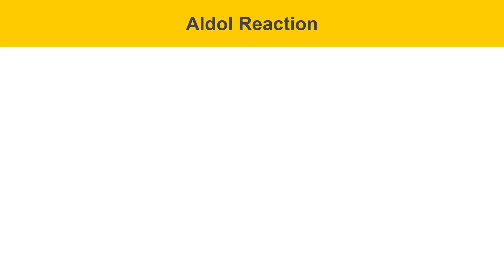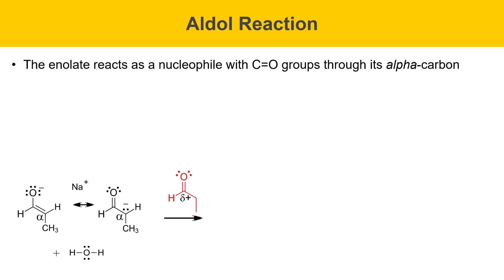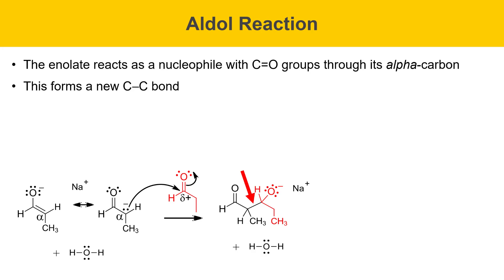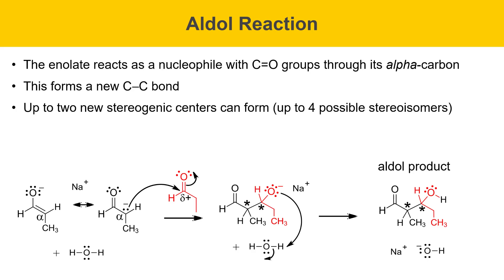We'll go through the aldol reaction mechanism on this slide. The enolate reacts as a nucleophile with C=O groups through its alpha carbon. The enolate attacks the carbonyl carbon of another propanol molecule, giving a new carbon-carbon bond between the alpha position of one propanol and the carbonyl of the other. Up to two new stereogenic centers can form in the aldol reaction, giving up to four possible stereoisomers. In this example we've generated two new stereogenic centers, which can each be R or S. The next step is that the negatively charged oxygen deprotonates a water molecule to give the neutral aldol product, which also regenerates the hydroxide catalyst.